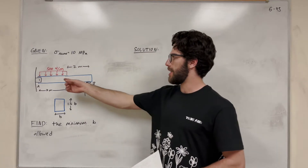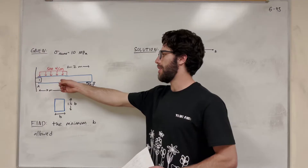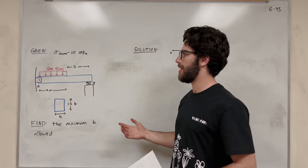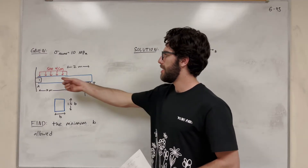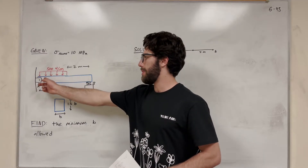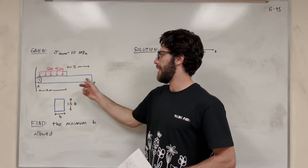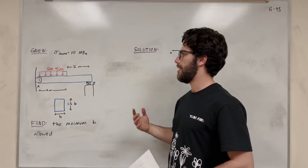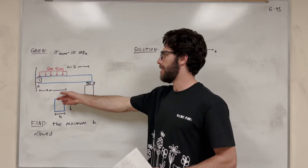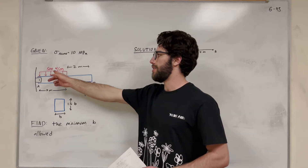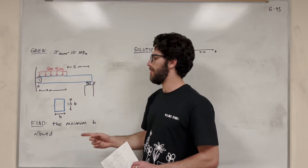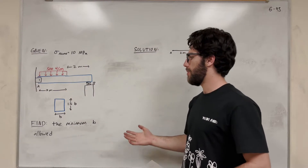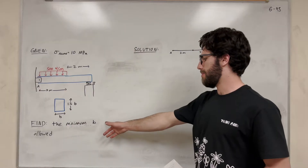So we have this diagram. We have this beam — it's being supported at A by a pin, and it's being supported at B. There are two meters here, two meters here, and then there's this distributed load. So our goal is to find the minimum B.